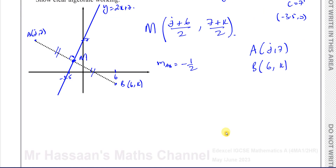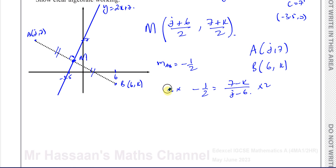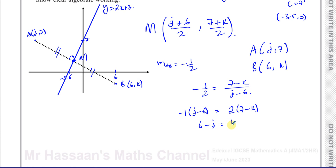So we can make a little formula for the gradient. We can say minus 1/2 equals the change in Y, which is 7 minus K, over the change in X, which is J minus 6. So we can connect these together with one equation. I'll just cross-multiply — multiply both sides by 2 and by J minus 6. So you have 7 minus K multiplied by 2 on this side, and minus 1 times J minus 6 on the other side. So I end up with 6 minus J equals 14 minus 2K.